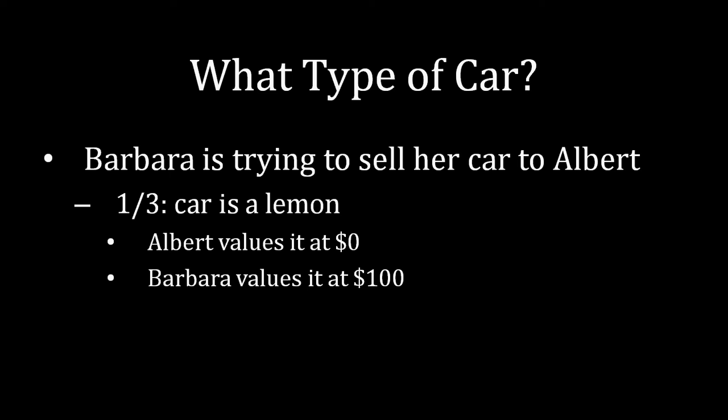The last third of the time is the problem — the car is a lemon. Albert now finds the vehicle completely worthless and values it at $0, while Barbara, for some sentimental reason, values it at a very small amount: $100. Notice that one third of the time, if information were revealed, Albert would know the car is a lemon and no agreement would take place, because Albert values it at an amount less than what Barbara values it at. So here we wouldn't expect trade, but we should see trade in those other two circumstances.